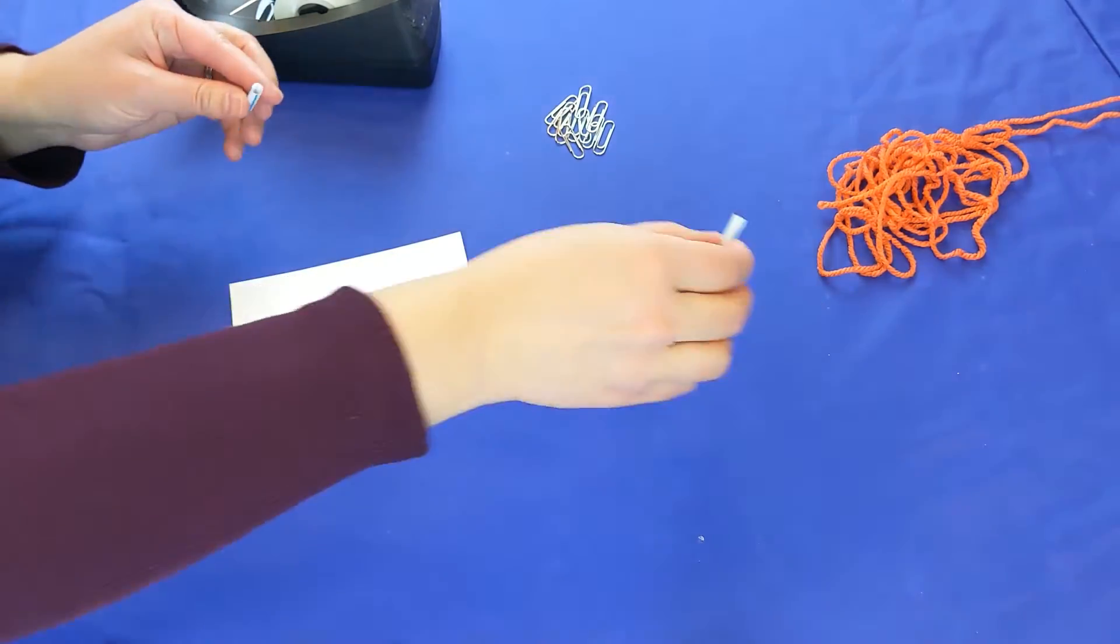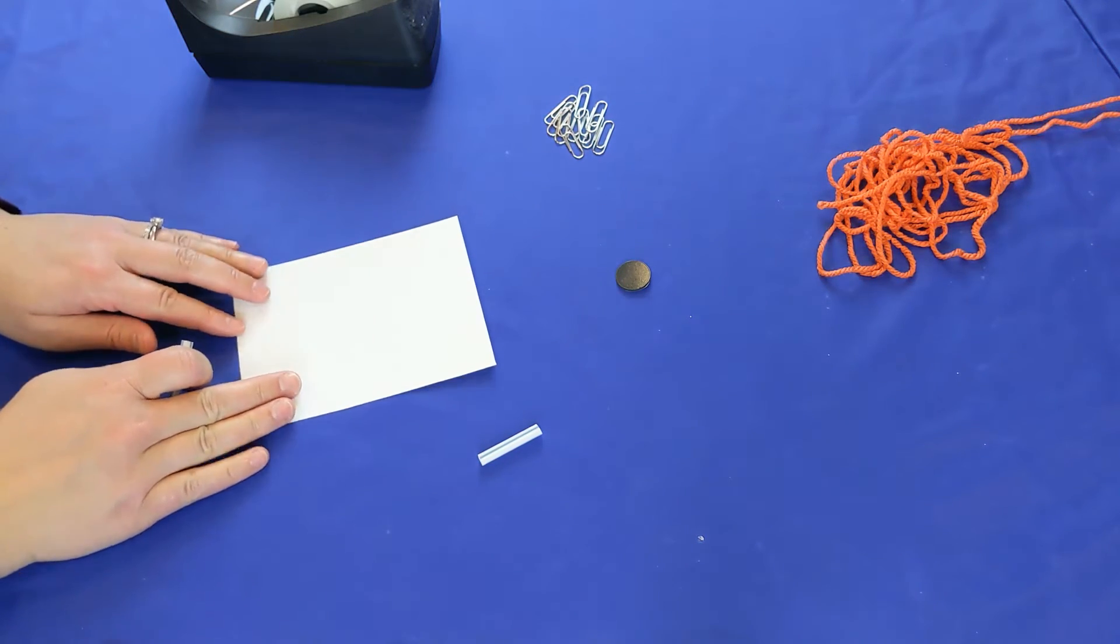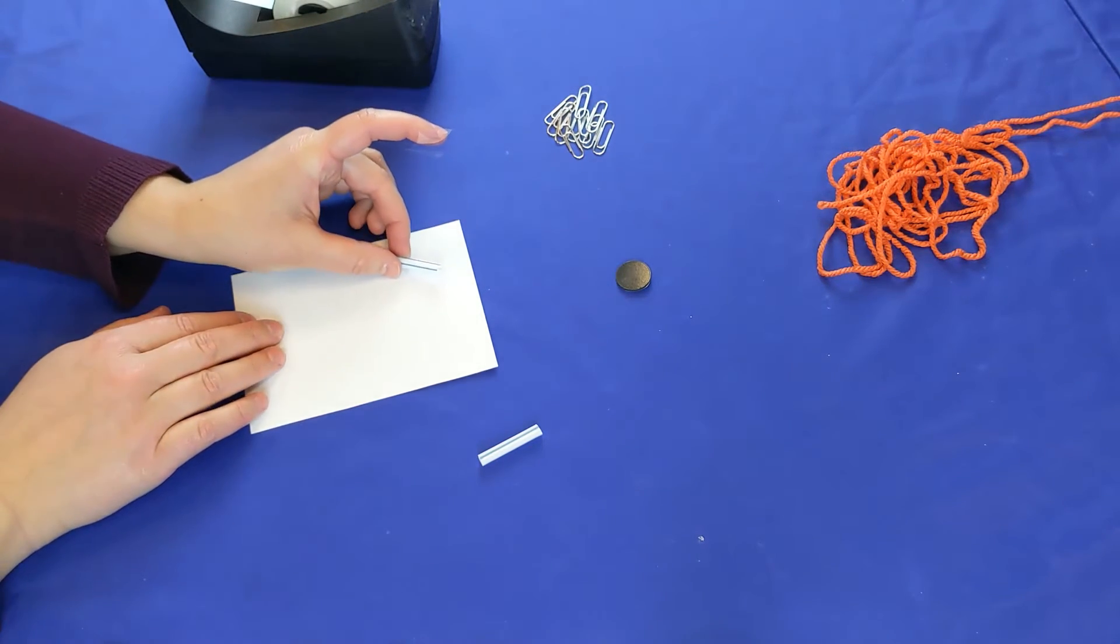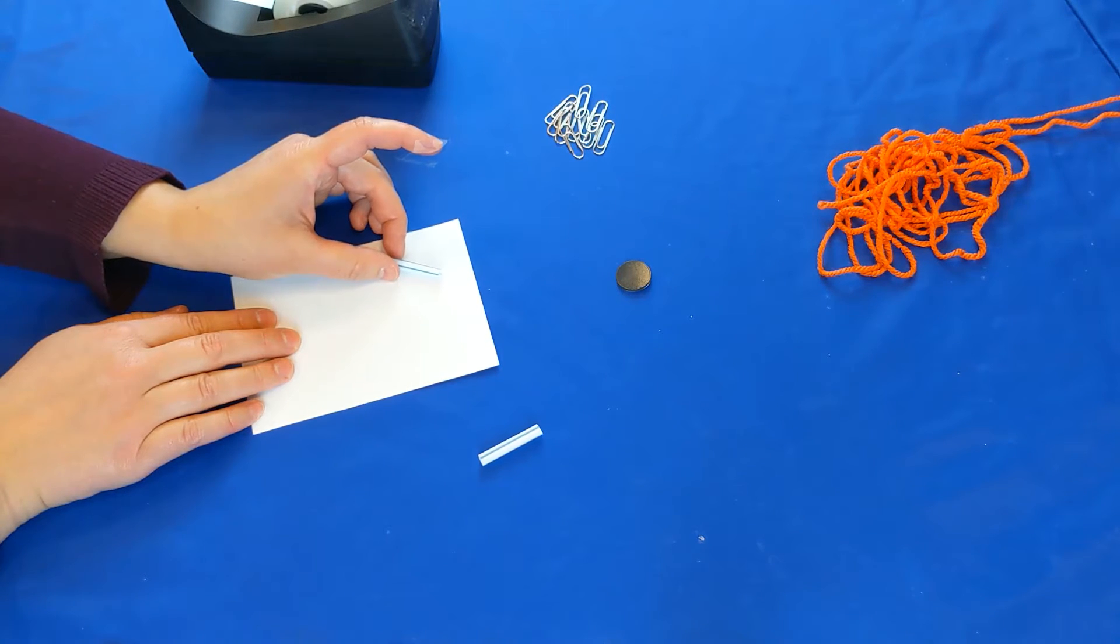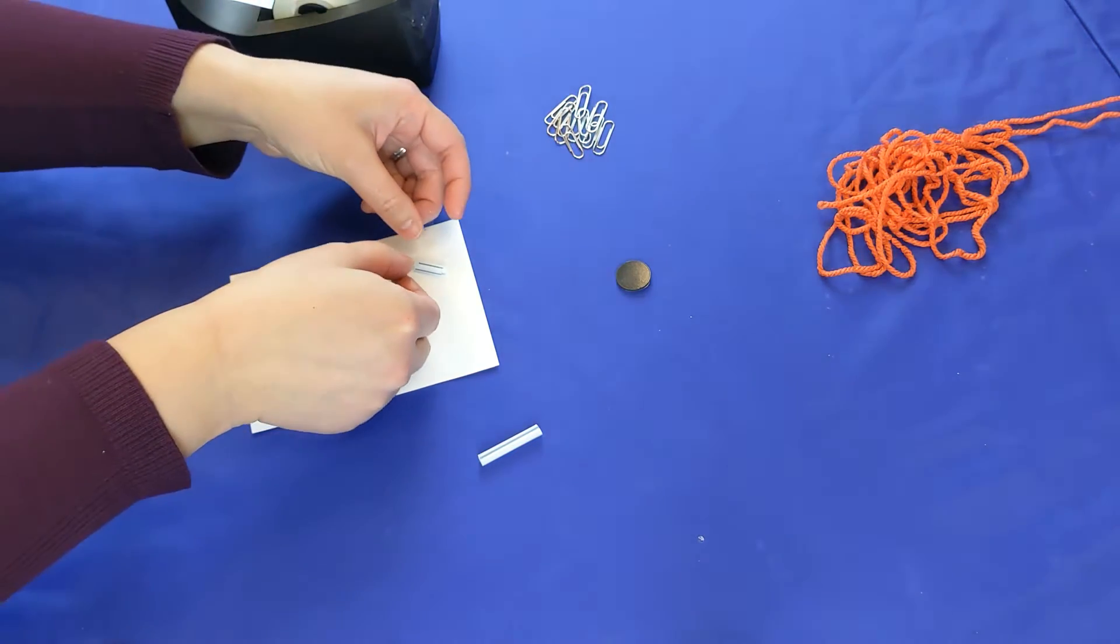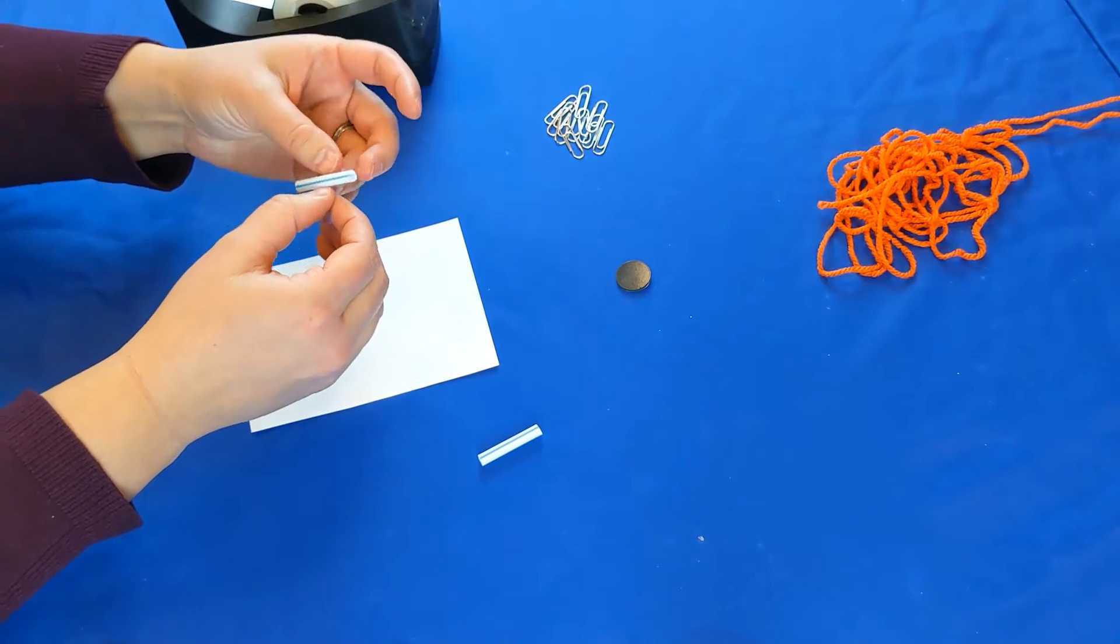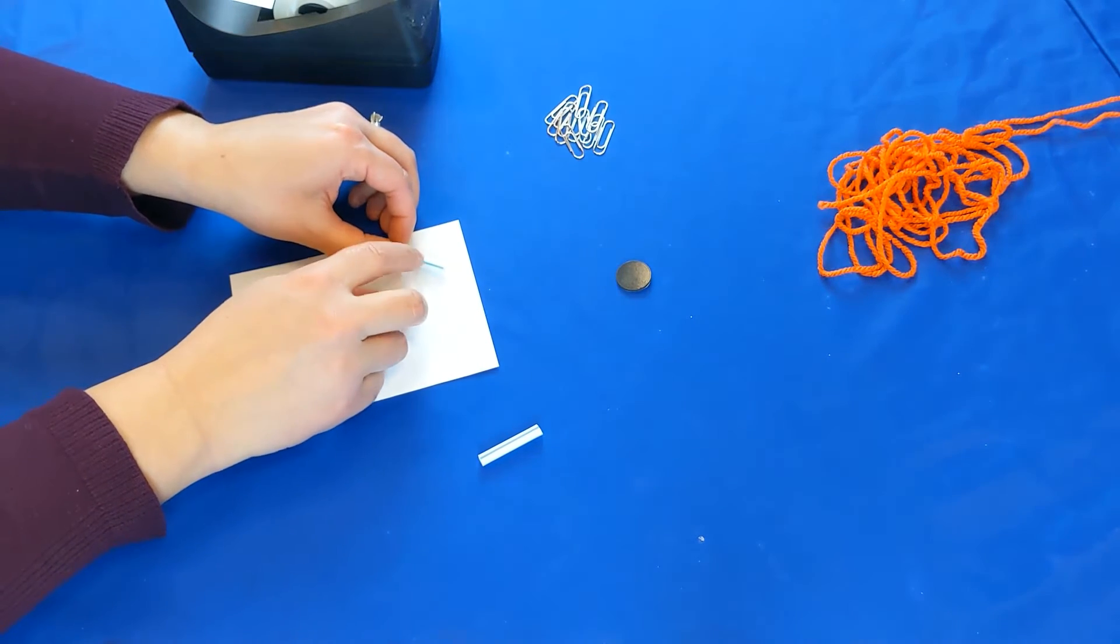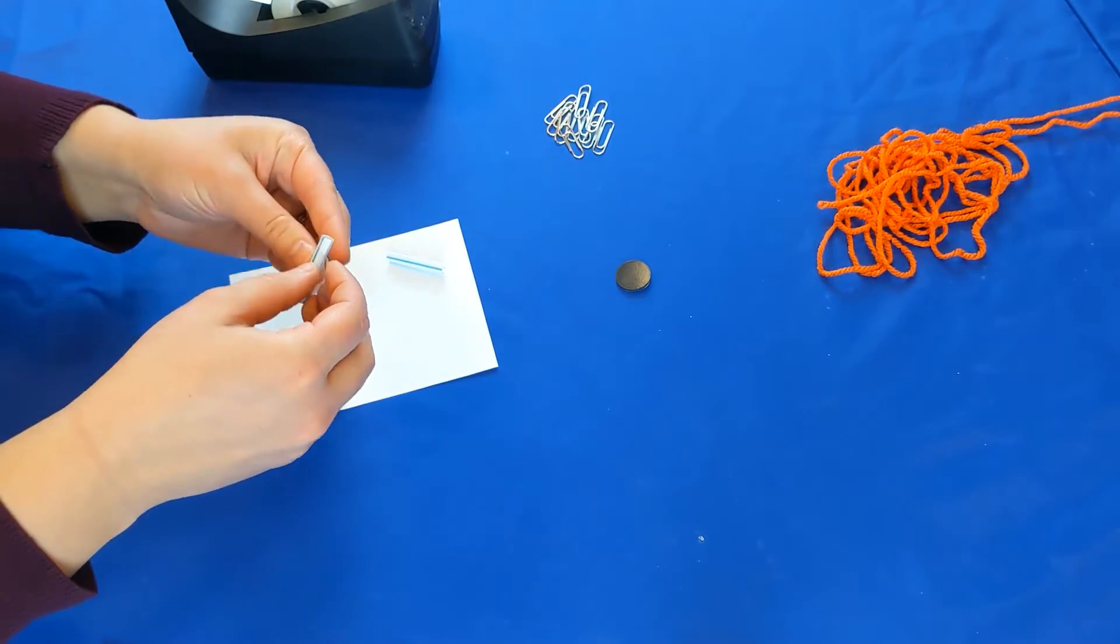Now we're going to take our two pieces of straw and tape them to the index card here in the center. We want our pieces of straw to be at the front edge of the card and slightly slanted in towards the center. A tip here is to try to make sure the tape wraps around the straw as much as possible as you tape it down to your card. Now I'm going to tape down the second piece of straw.